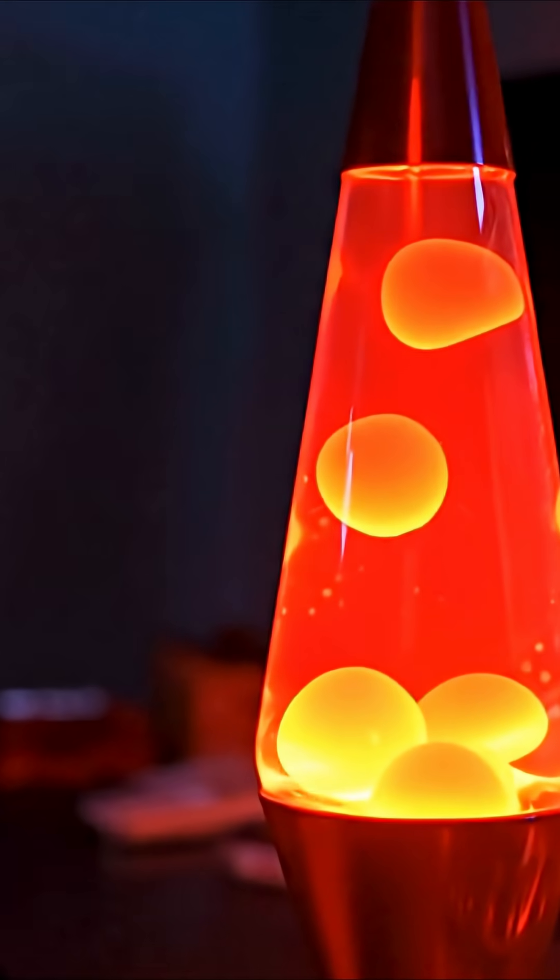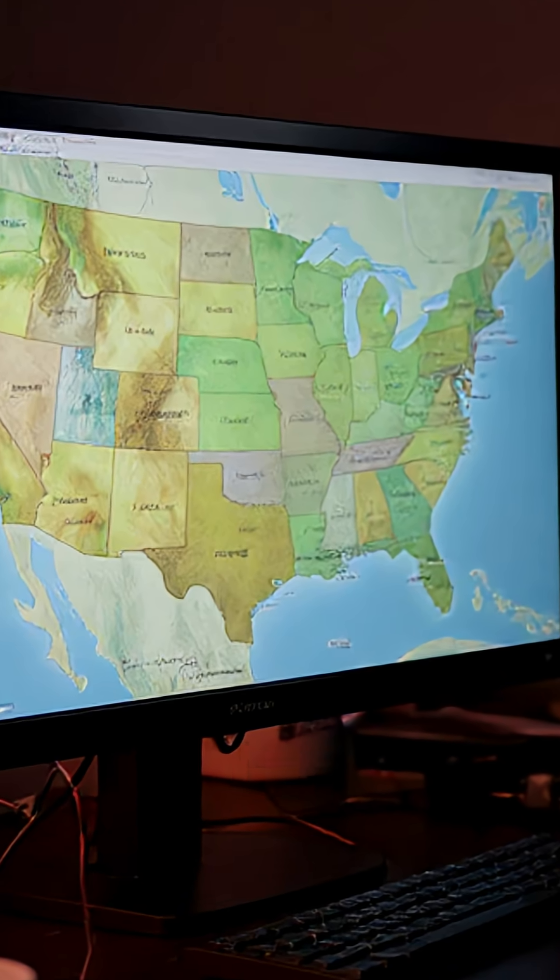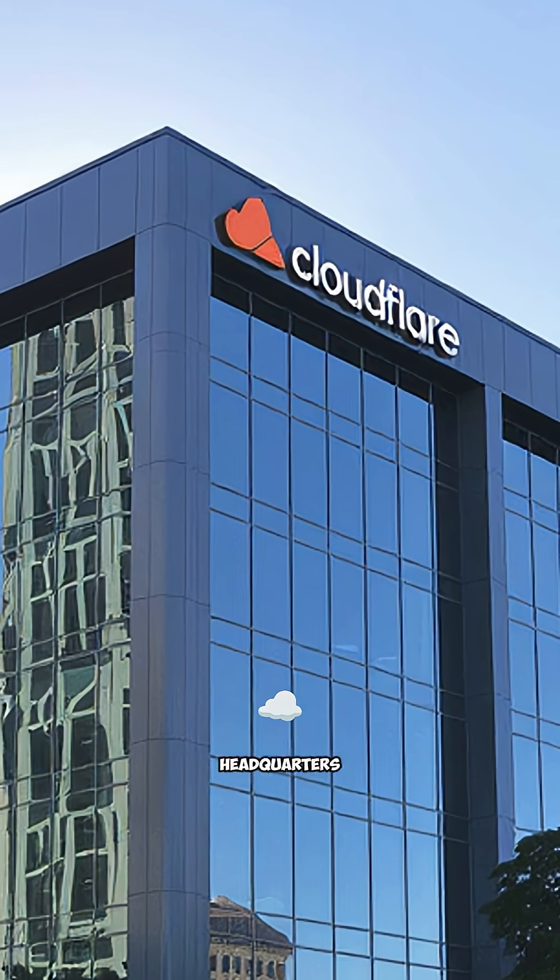The internet's wildest security feature? These lava lamps. They're located in the US, in downtown San Francisco, at Cloudflare's headquarters.